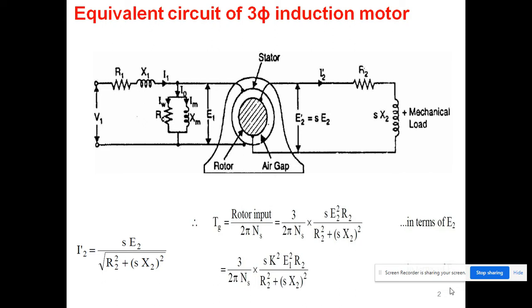As we know from our last three lectures, this induction motor is also known as the asynchronous motor because its speed is always less than the speed of the rotating magnetic field. So we call it an asynchronous motor or induction motor. It is also known as the single-excited motor because we are giving supply only to the stator, not the rotor. It is also called the self-starting motor.